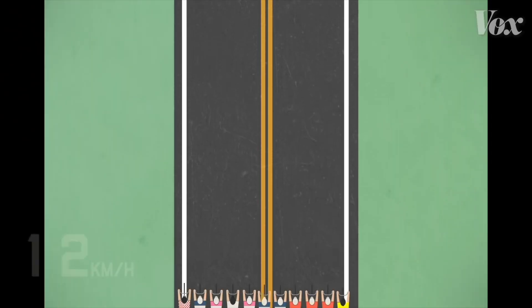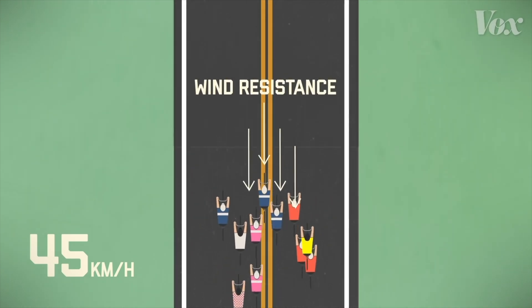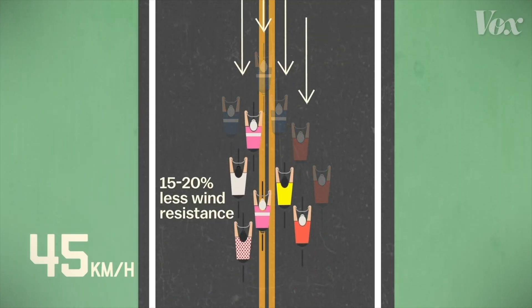It allows cyclists to save energy by sitting behind another rider or drafting. At high speeds, riders use most of their energy to pedal against wind resistance. But when a rider stays close behind another, they're sheltered from much of that. So pedaling becomes much easier, and they can keep up with the front riders.